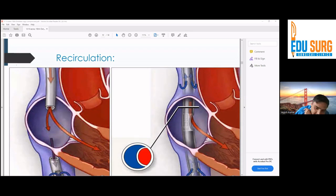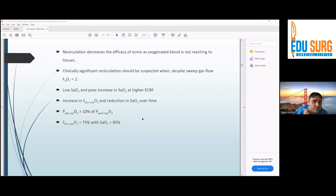How do we identify that a patient is recirculating? Recirculation decreases the efficacy of ECMO because oxygenated blood is not reaching the tissues. It's just going round and round, not going to the right ventricle or left ventricle. Clinically significant recirculation is suspected when, despite 100% oxygen, there is low saturation.